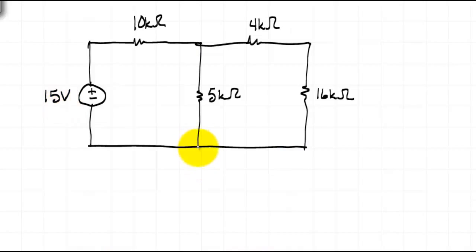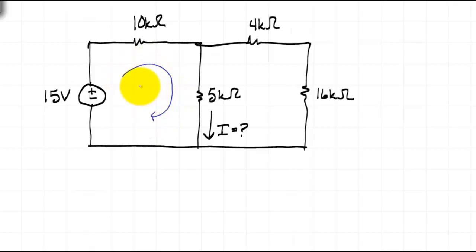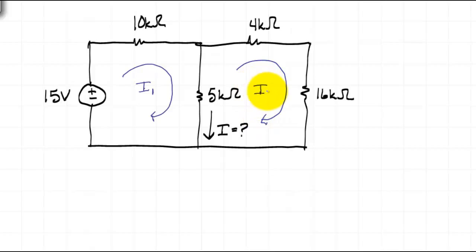Let's apply mesh current analysis to a simple circuit consisting of a single voltage source and two loops. We're trying to determine the current through the 5kΩ resistor. We'll begin by identifying loops and writing them in terms of mesh currents I1 and I2. The next thing is to choose a polarity for all the voltages, trying to choose them so that they already agree with the passive sign convention with respect to the defined mesh currents.